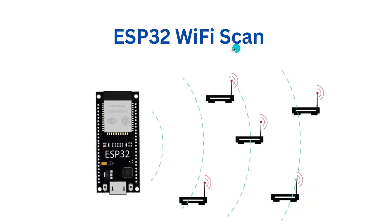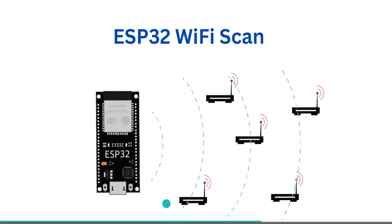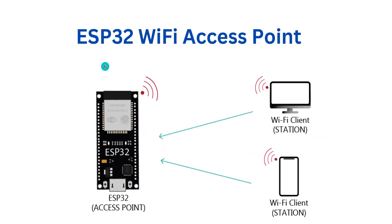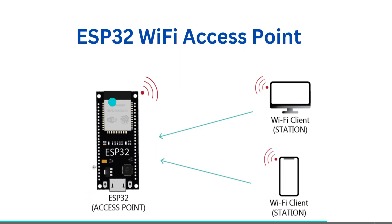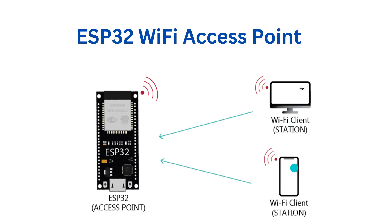ESP32 Wi-Fi Scan: ESP32 can scan the nearest networks available for it. It can scan in the Station mode. In Wi-Fi Access Point mode, ESP32 acts as the Access Point and connects to the various stations.